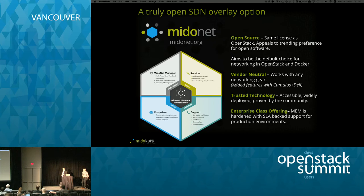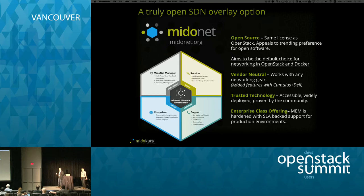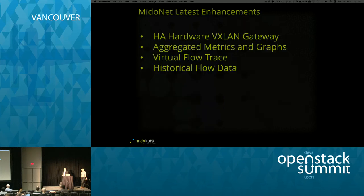Mitonet aims to simplify Neutron dramatically while future-proofing your scaling. We're hoping to see more adoption — the user survey shows us rising in the charts. Mitokura provides an enterprise version of Mitonet. You can go to GitHub or mitonet.org for the open source version. Mitokura provides a downstream enterprise version that we've hardened and tested, with advanced management tools on top including a graphical user interface.